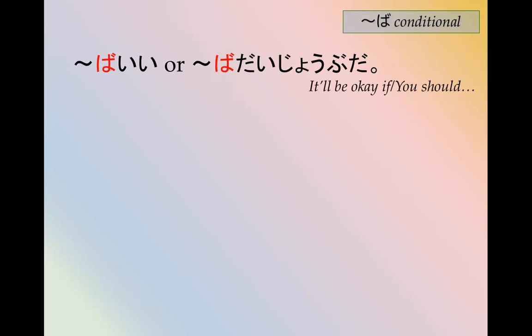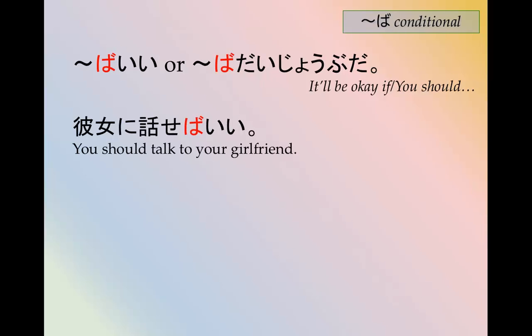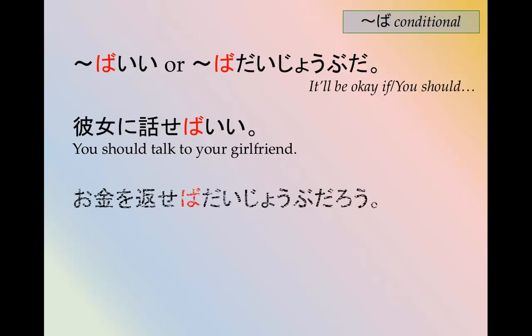You can also use ばいい or ばだいじょぶ, meaning 'it'll be okay if' or 'you should do something.' For example, 彼女に話せばいい — you should talk to your girlfriend, or it'll be okay if you talk to your girlfriend. お金を返せばだいじょぶだろう — it'll be alright if you return the money.